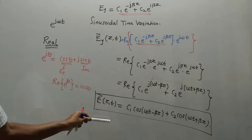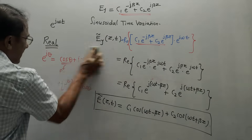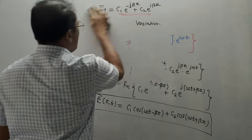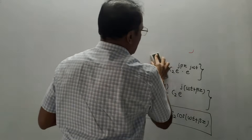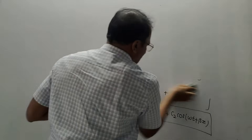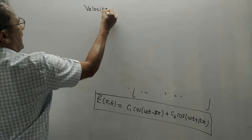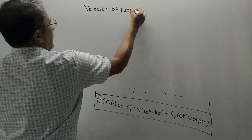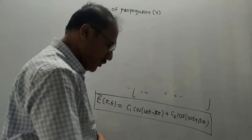This is the final expression for the perfect dielectric medium. There are two important parameters related to these equations that are expected from an exam point of view, and their derivation is straightforward. The first parameter is called velocity of propagation, denoted by v.